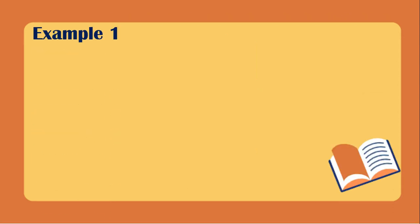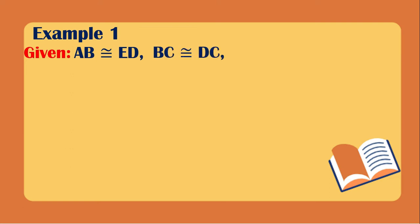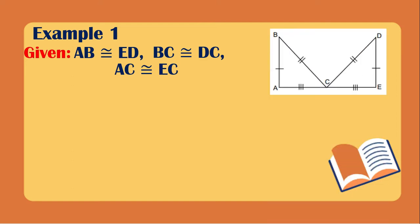Example number one. Our givens are: AB is congruent to ED, BC is congruent to DC, and AC is congruent to EC. This is the illustration, and we need to prove that angle BAC is congruent to angle DEC.